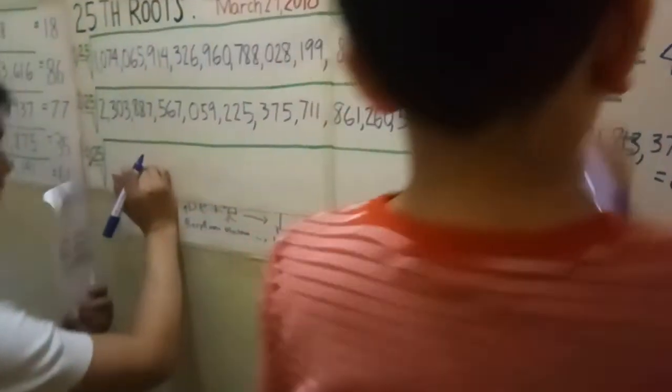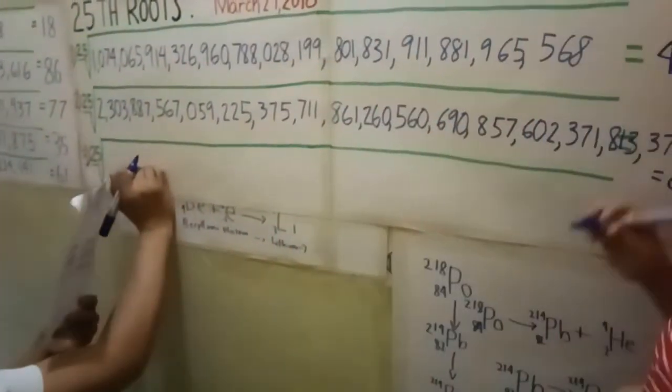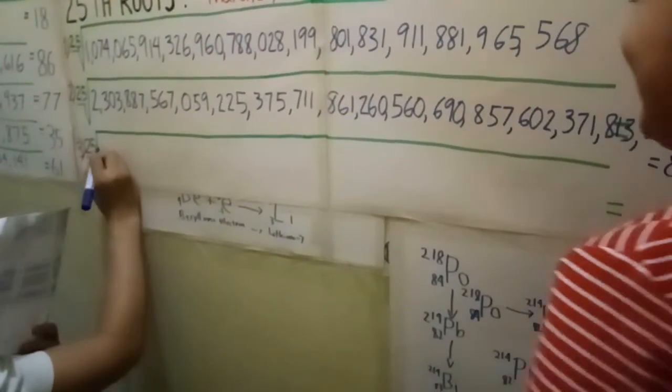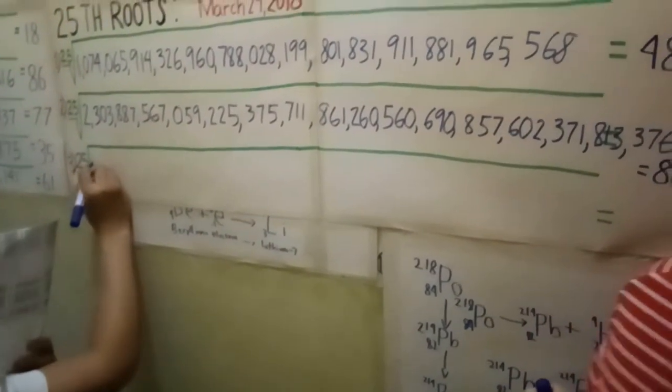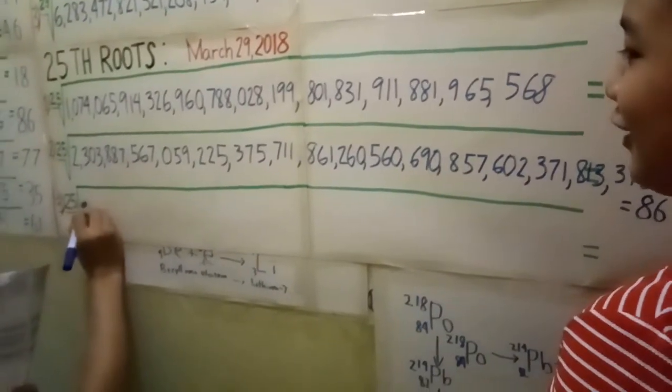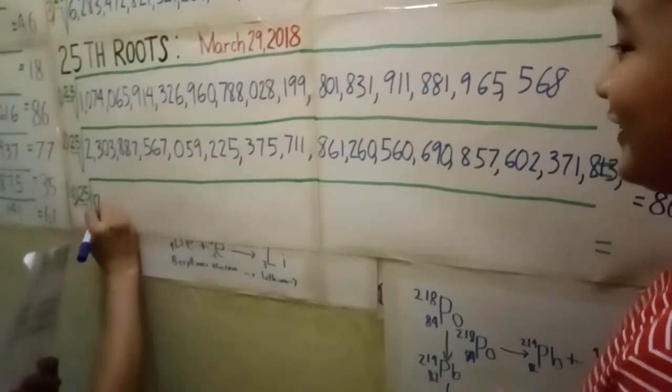Last number. Yes. Finally. Last number — the last of the longest numbers. These are large numbers, the last of the longest.